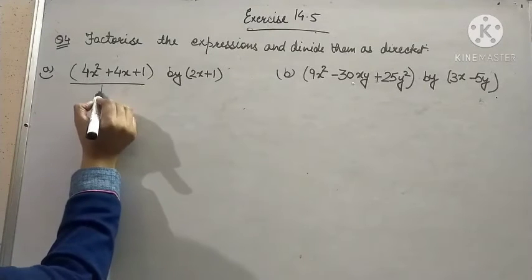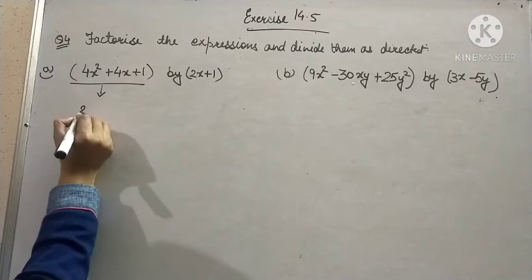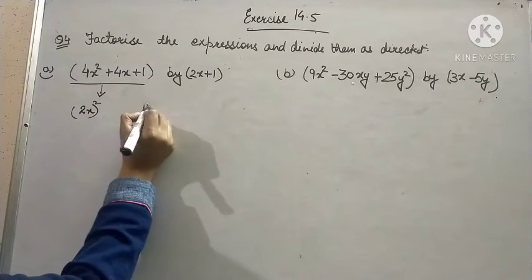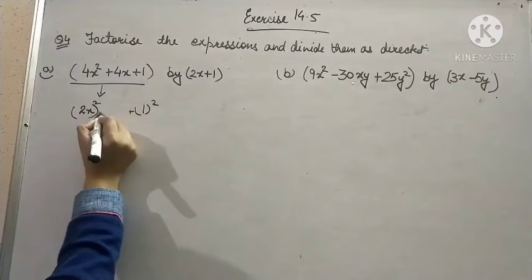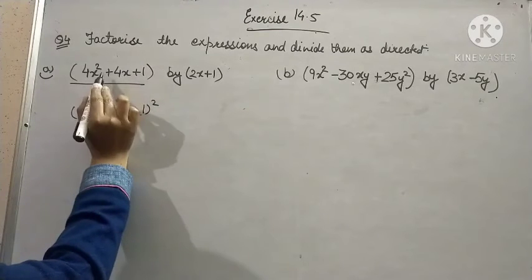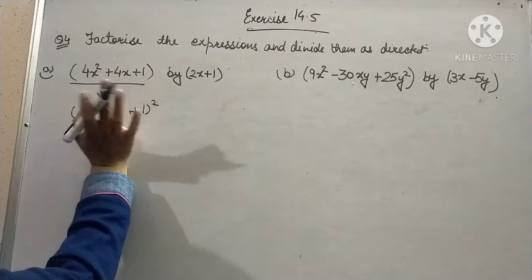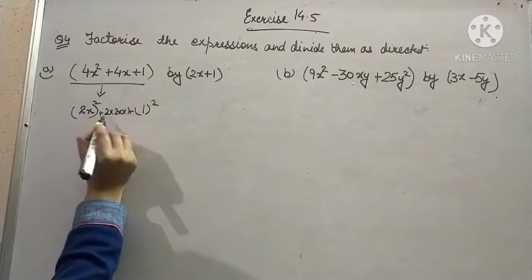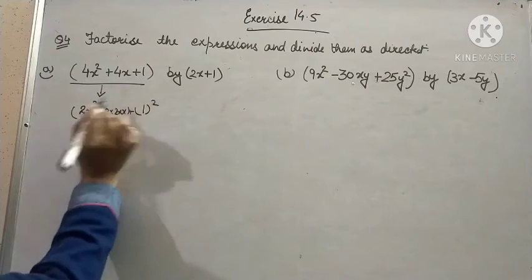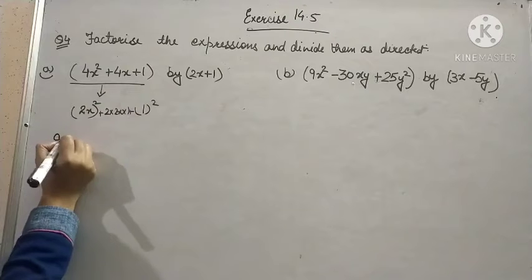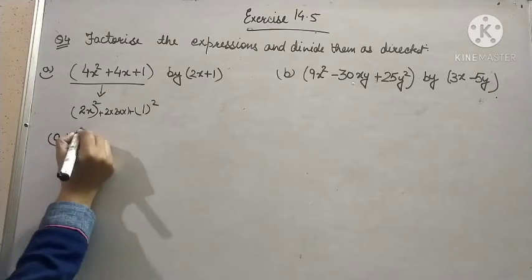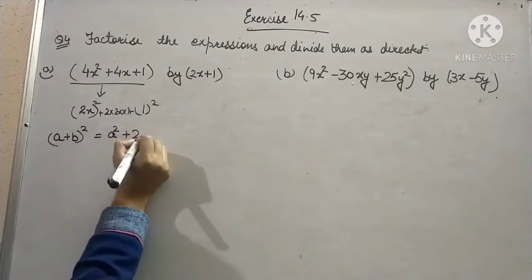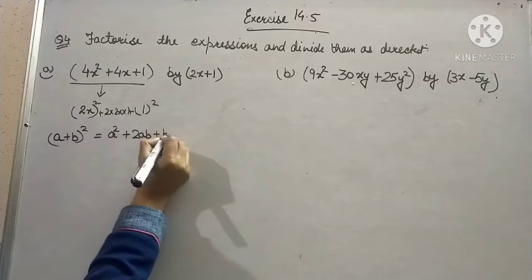Now, when I look at this expression, it is clear that this is the square of 2x and 1 can be written as square of 1. We have to check the middle term whether it satisfies 2ab or not. 2 into 2x into 1 which is equal to 4x, so it is satisfied. That means we can use the identity a plus b whole square is equal to a square plus 2ab plus b square.